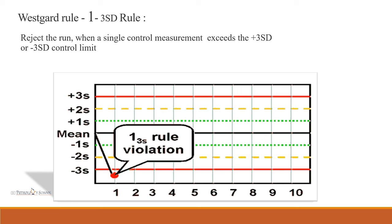The following slides show the interpretation of Westgard rules. The first is the 1-3SD rule: reject the run if one single control measurement exceeds plus 3 SD or minus 3 SD. Here, the control value is exceeding minus 3 SD, so this run is rejected.